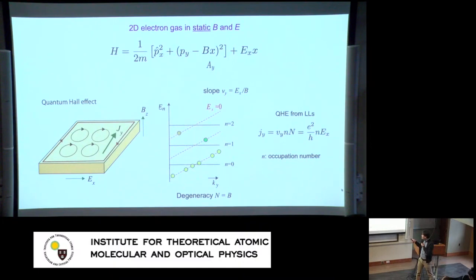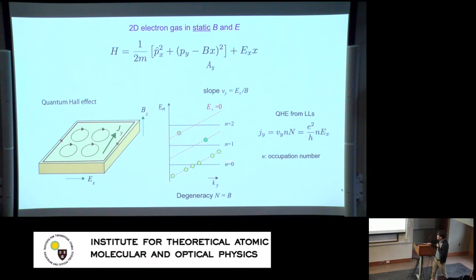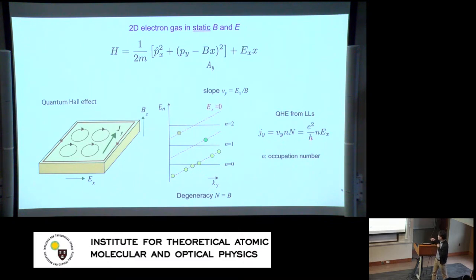Two more introduction slides. This is about quantum Hall — we already know this from undergraduate education. In the Landau gauge, my gauge field in the y direction is B times x, so I get a magnetic field in the z direction. This is just a harmonic oscillator problem — we solve it and get harmonic oscillator states, the Landau levels. If we include a direct electric field, the flat Landau levels tilt, I get chiral levels, and current starts to flow proportional to the electric field — with the unit e-squared over h.